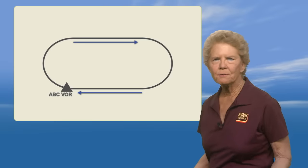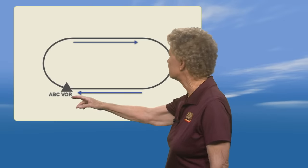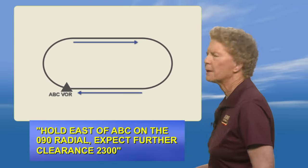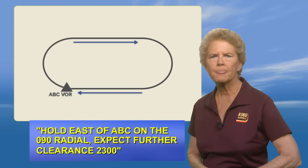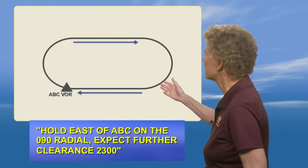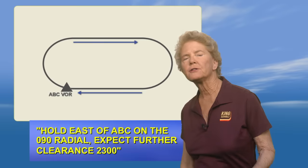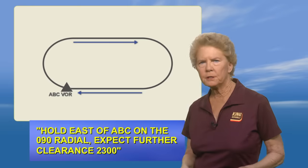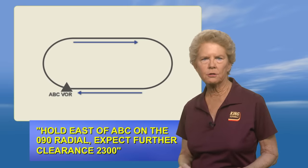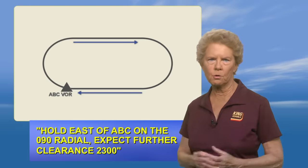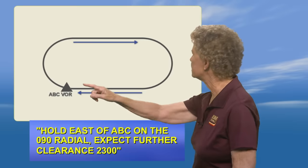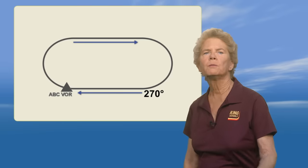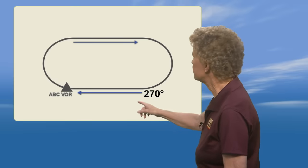Let's say that you've been given holding at the ABC VOR. The controller clears you to hold east of ABC on the 090 radial. Expect further clearance at 2300. You may find it very helpful to draw that holding pattern out. During your knowledge test, use your scratch paper because you cannot mark the testing supplement itself. Now it's easier to start thinking in terms of the courses that would be flown to the holding fix. You've been told to hold on the ABC 090 radial, but your inbound course on that radial while holding will be the reciprocal of the radial, 270 degrees.